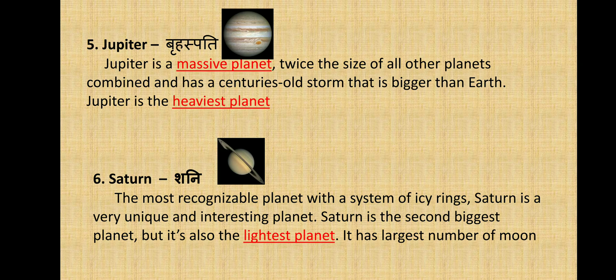Next you have Saturn, also known as Shani — the most recognizable planet with a system of icy rings. Saturn is a very unique and interesting planet. It is the second biggest planet but also the lightest planet. Saturn has the largest number of moons. You can see there is a very large ring, and inside that ring you can see the planet.